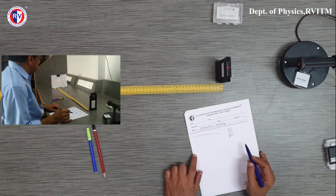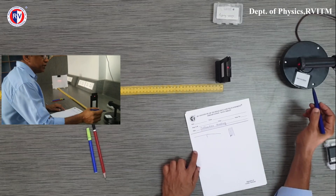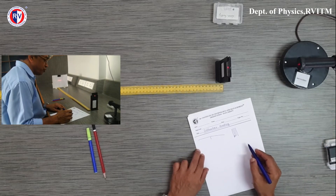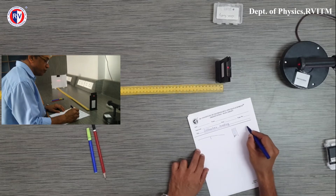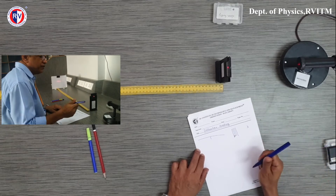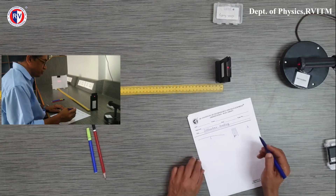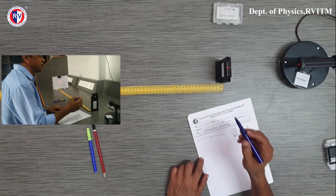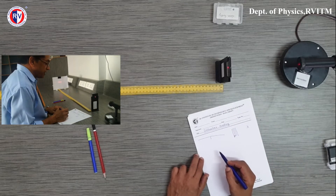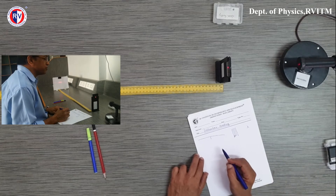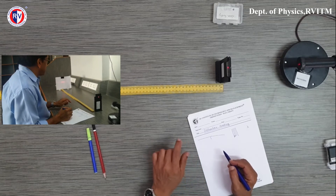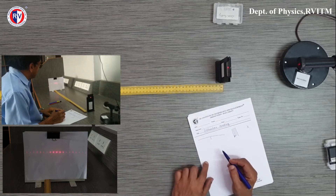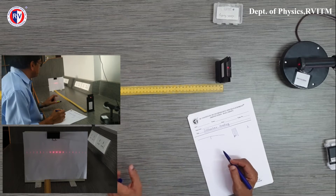We are using a semiconductor diode laser as a source — it is purely monochromatic. It gives only one particular wavelength; here the wavelength is around 650 nanometres. This light from the source is allowed to fall on the diffraction grating, which has 500 lines per inch, and to catch the diffraction pattern at a distance, a screen is set up on which you will see the diffraction pattern.